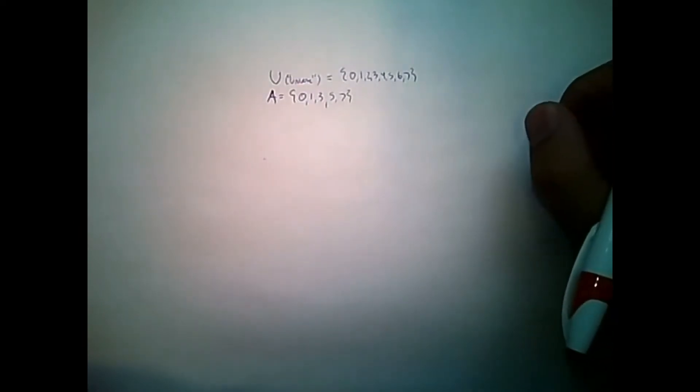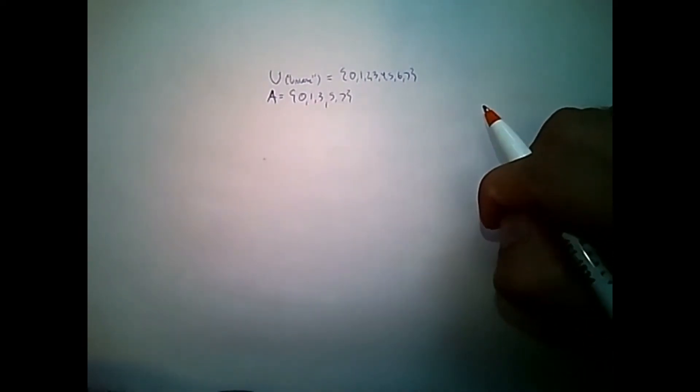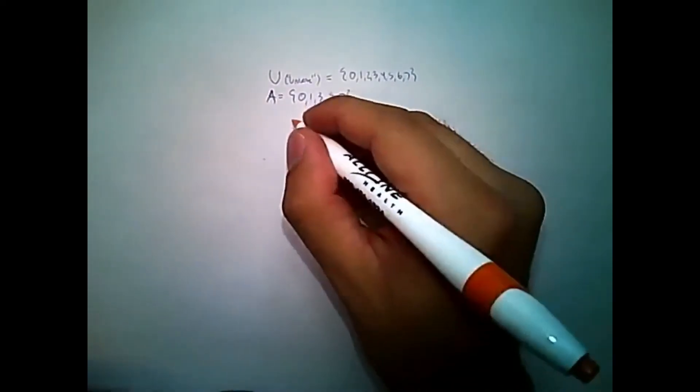One way I can represent A as a programmer is using what's called a bit string. That is, every bit corresponds to the number that shows up in this set. So for set A, for example,